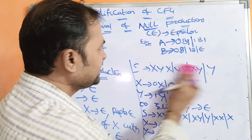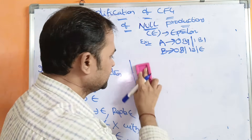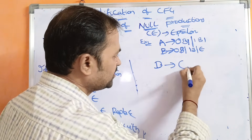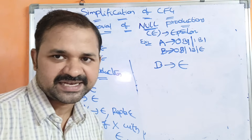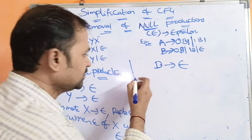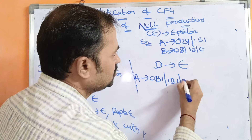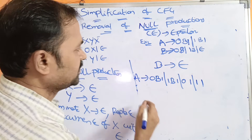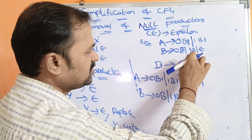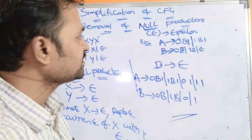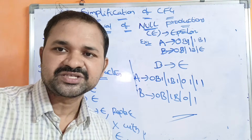Now the second example: A produces 0B1 or 1B1; B produces 0B or 1B or 1 or epsilon. We identify one epsilon production: B implies epsilon. To eliminate it, we search for B in the right-hand side and replace each occurrence with epsilon. For A: write 0B1 and 1B1 as-is, then substitute epsilon for B — 0·epsilon·1 gives 01 and 1·epsilon·1 gives 11. For B: write 0B and 1B as-is, then substitute epsilon — 0 and 1. So these are the productions after eliminating all null productions from the grammar.